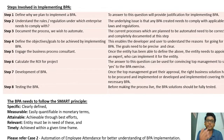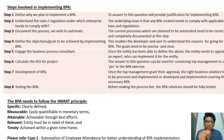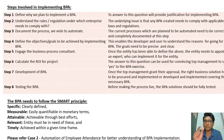Step five: engage the business process consultant. Once the entity has defined goals and objectives, it needs to appoint an expert who can implement BPA for the entity.